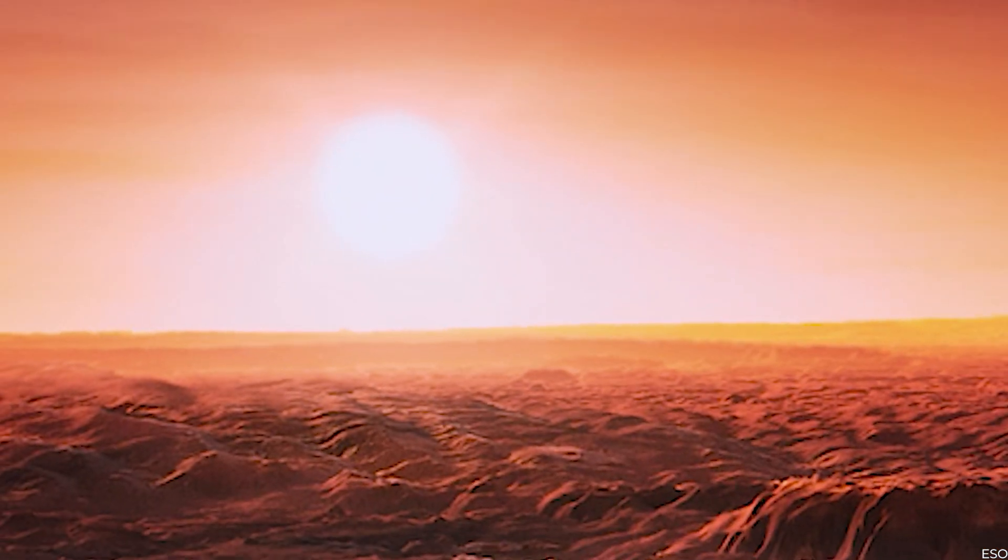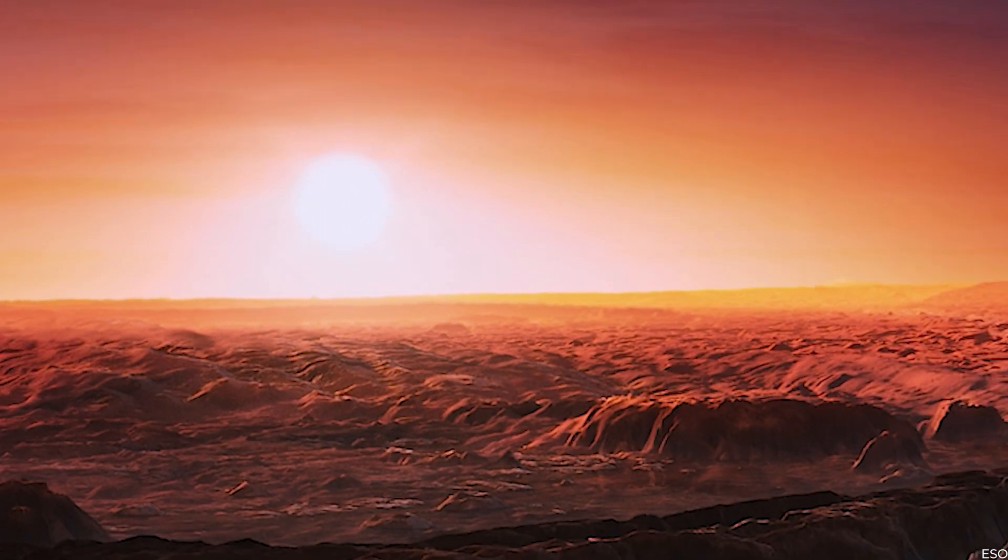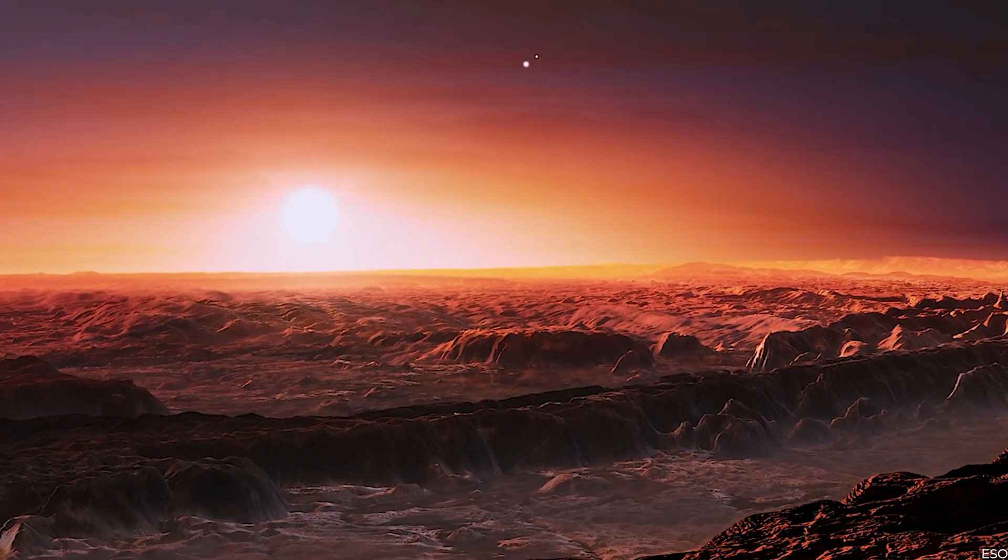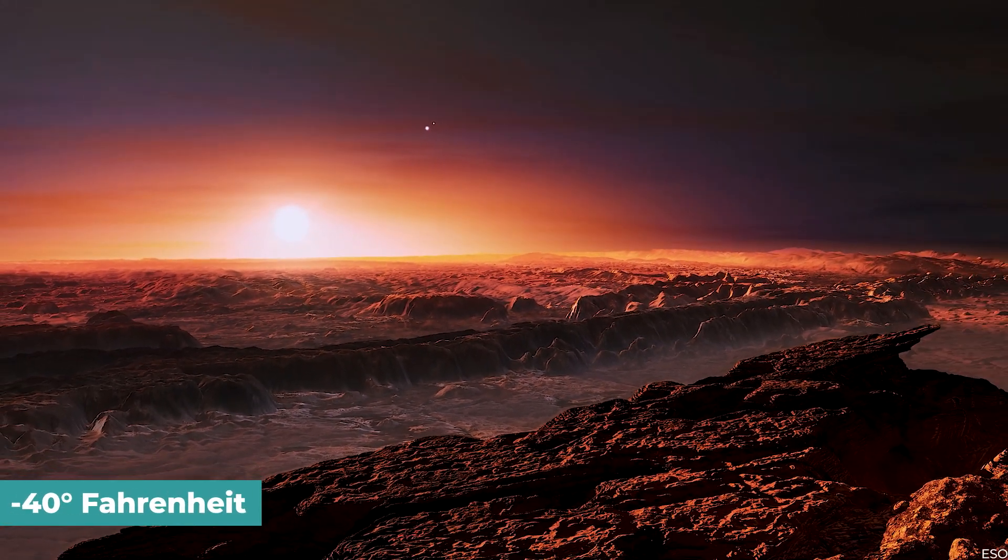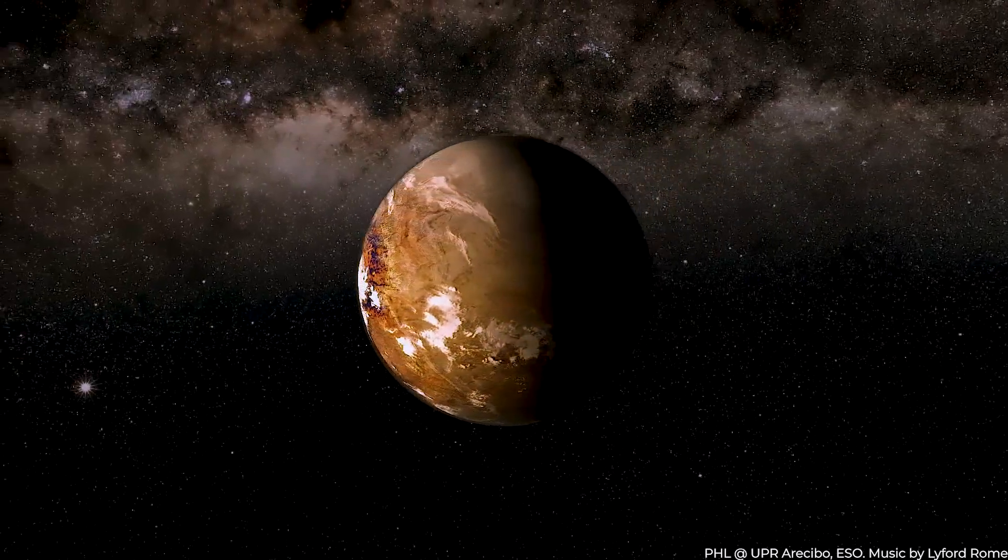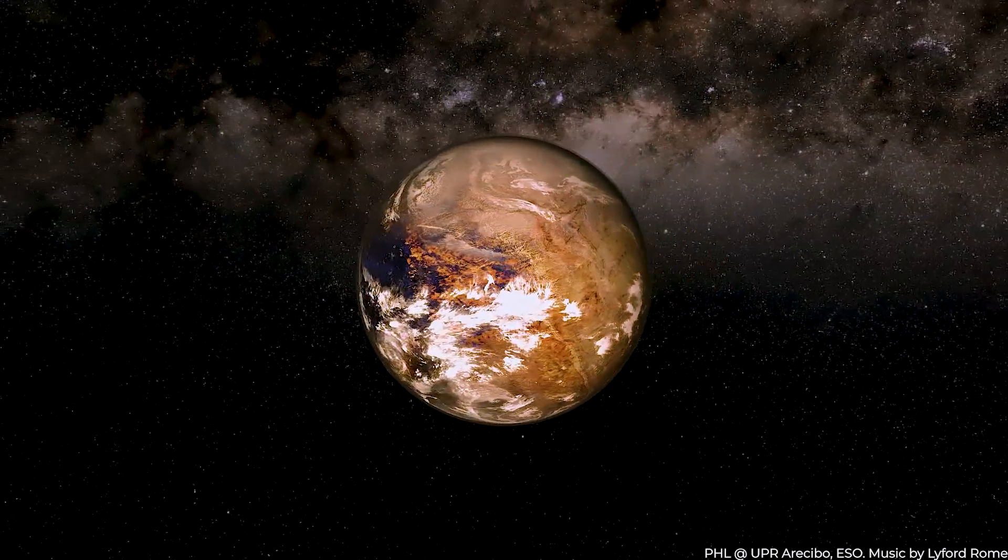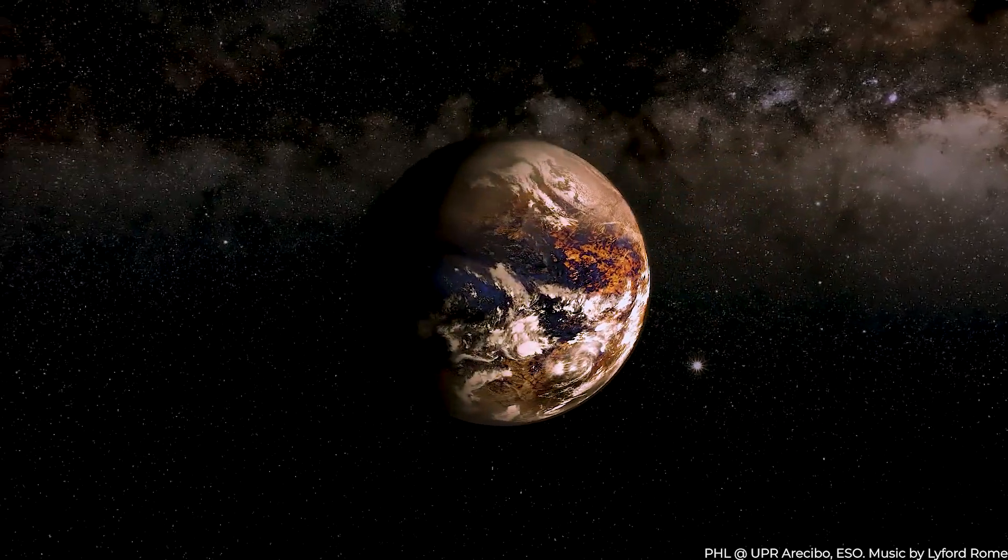According to scientists, the planet gets enough radiation to keep its surface temperature at about minus 40 degrees Fahrenheit. Like other red dwarf star planets, Proxima b is rocky and has one side that is always dark.